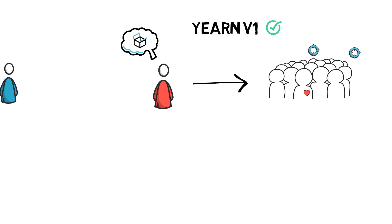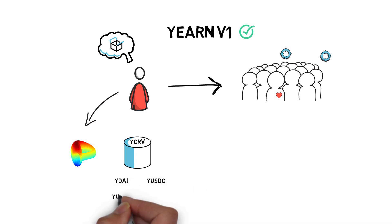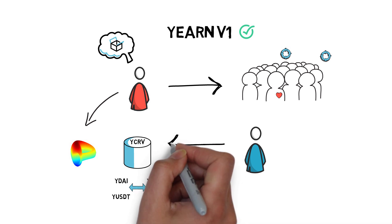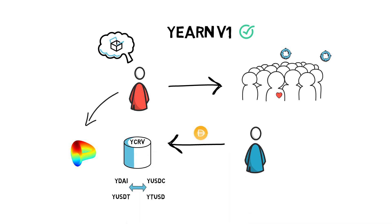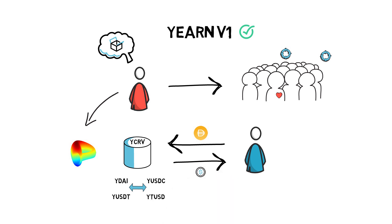At this point, Andre also started working with Curve on the yCRV liquidity pool. The yCRV pool contains the following Y tokens: yDAI, yUSDC, yUSDT, and yTUSD, making it easy to swap between Y tokens without unwrapping them into their underlying tokens. By depositing stablecoins to the yCRV pool, users can earn trading fees for providing liquidity, on top of getting a return on their yield-bearing Y tokens.